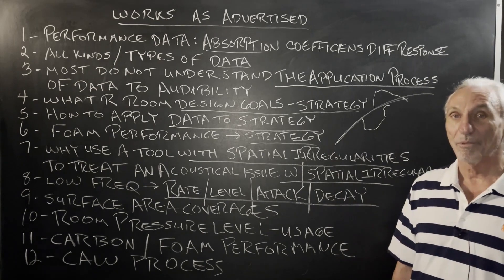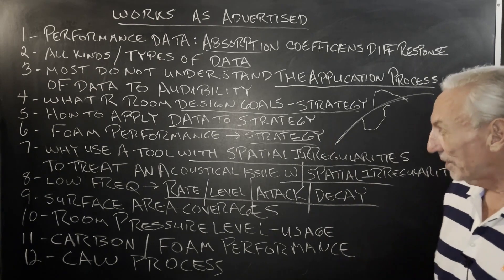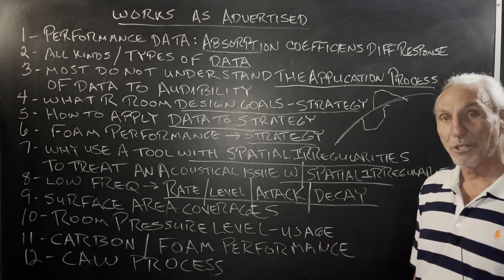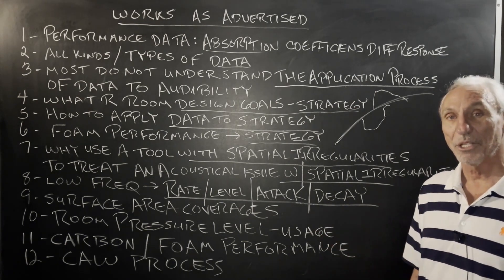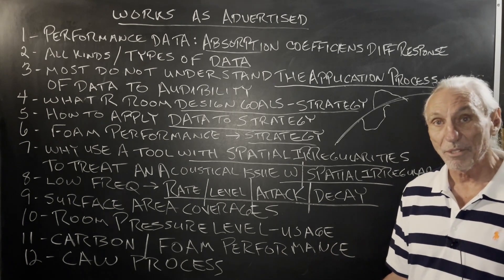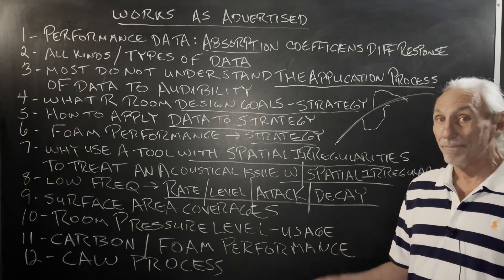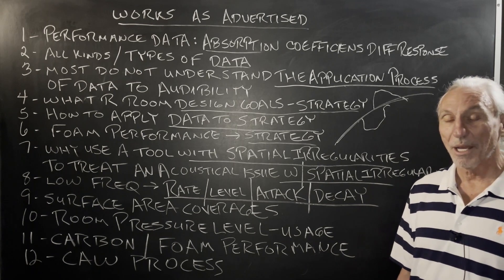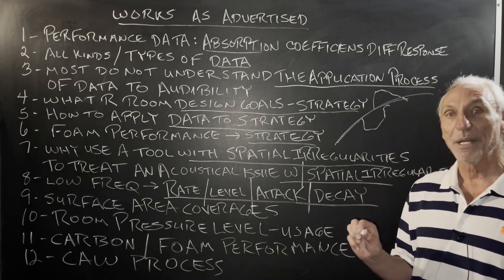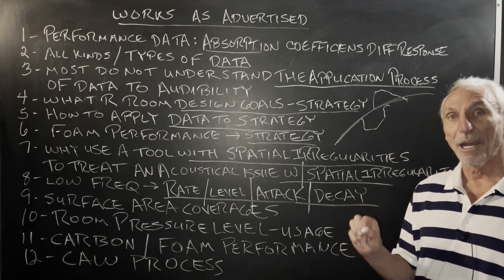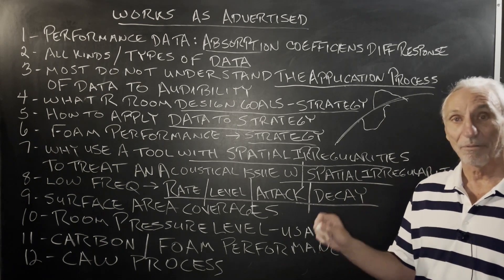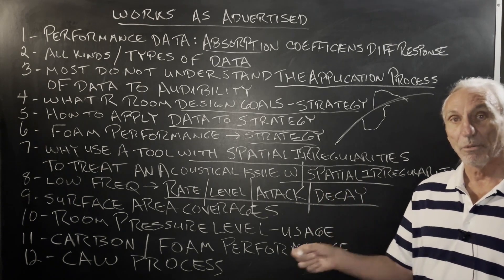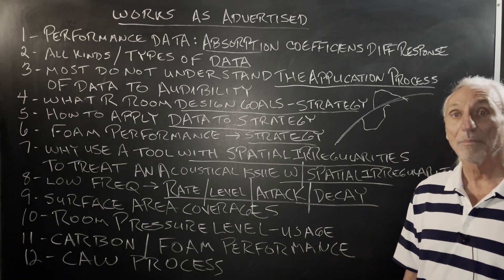So once again, our room form tries to help you bridge that gap between performance and application. Room pressure level — how much energy are you going to put in the room? That determines how much treatment you need, how much surface area coverage you need, and the rate and level of absorption. It all has to be calculated. Remember, every dimension in your room — the width, the height, and the length — produces a different problem: a different frequency, a different amplitude. So you've got to know what you're doing. There's no one treatment that fits all.